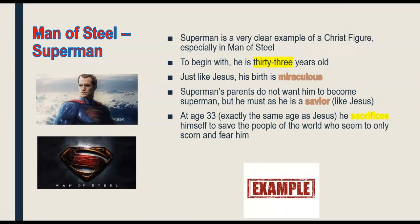The next example I chose is Superman, specifically in Man of Steel. To begin with, he is 33 years old, the same age as Jesus. Just like Jesus, his birth is miraculous. Superman's parents don't want him to become Superman, but he's a savior, so he does it anyway. And at age 33 — the same age Jesus did this — he sacrifices himself to save the people of the world. Again, sacrifice is a big deal when it comes to Christ figures, but in this case the fact that he was 33 was very intentional.